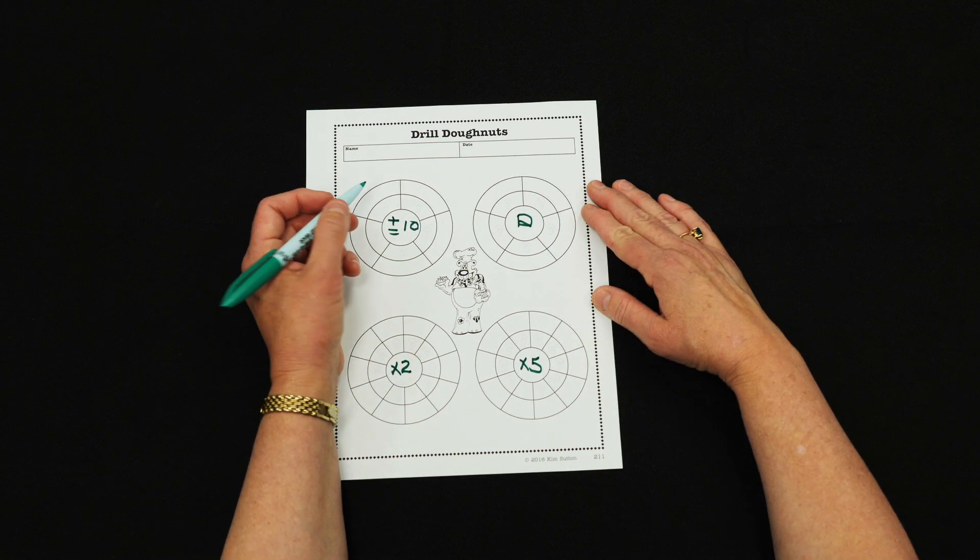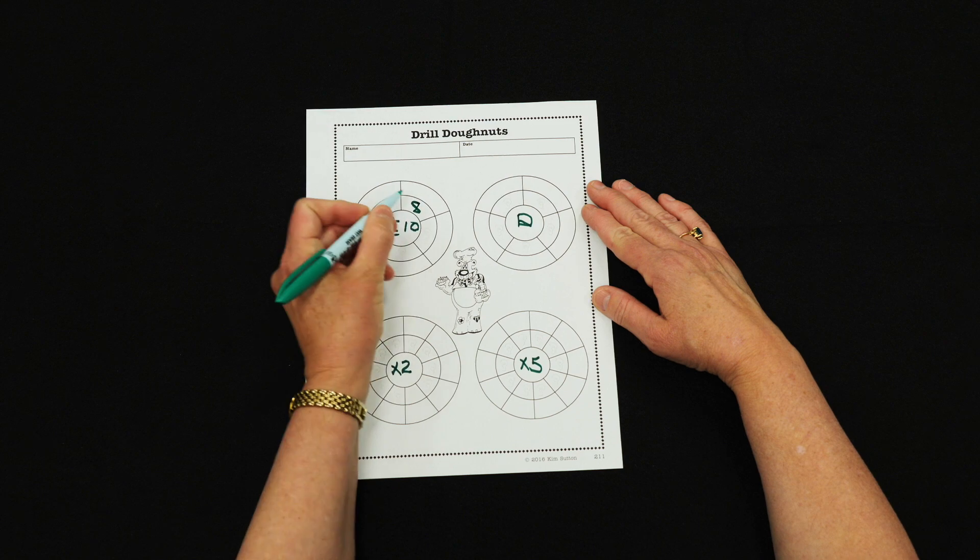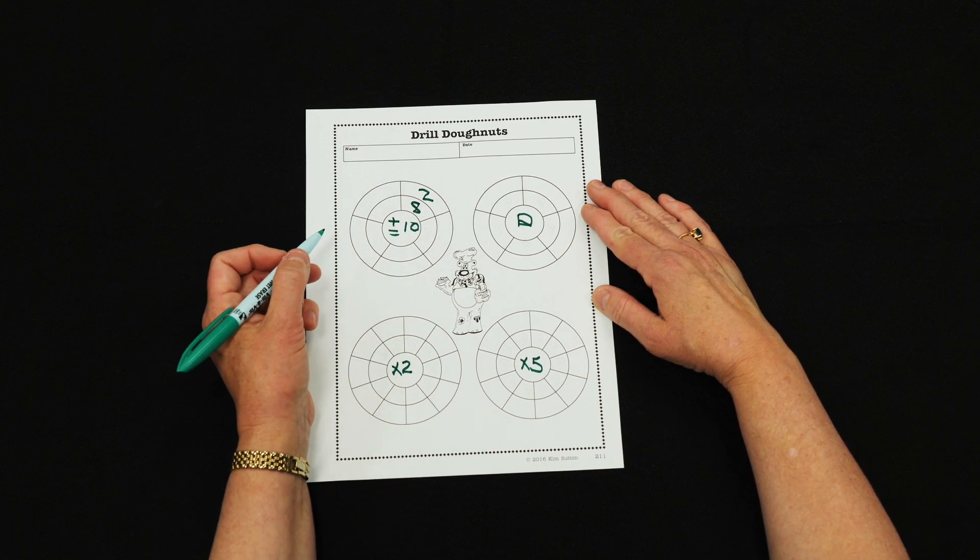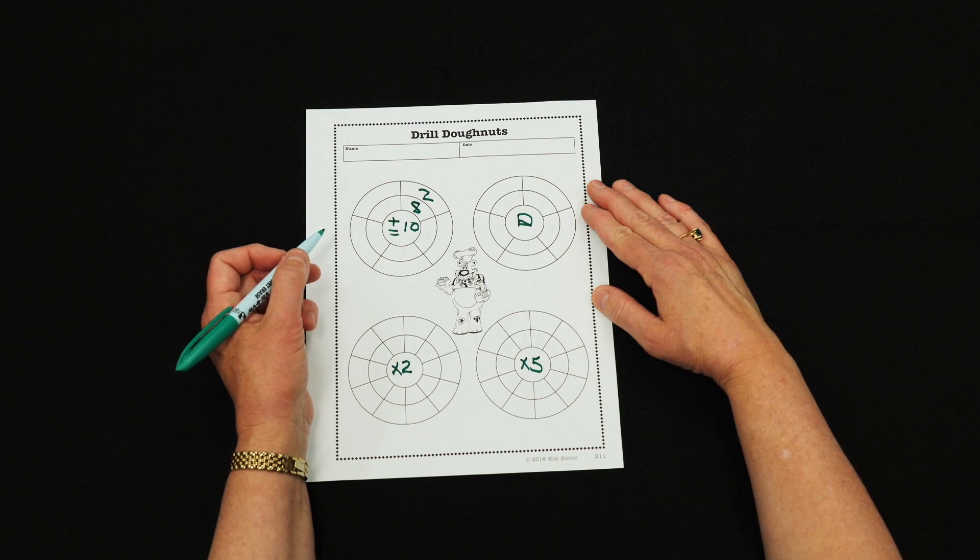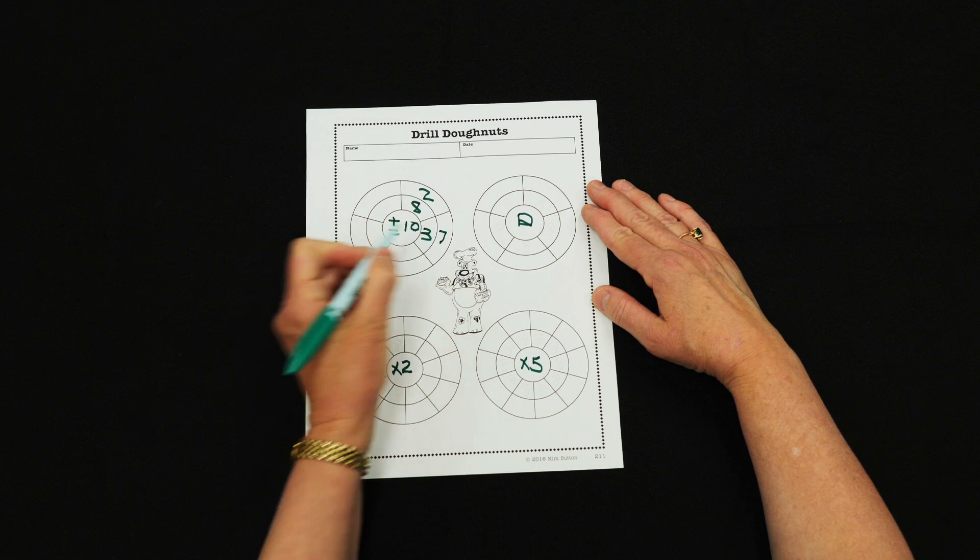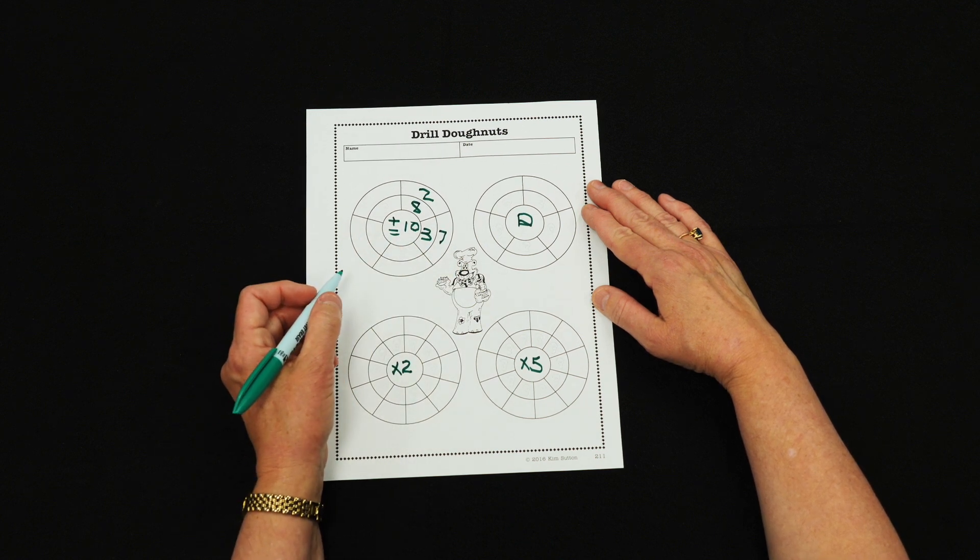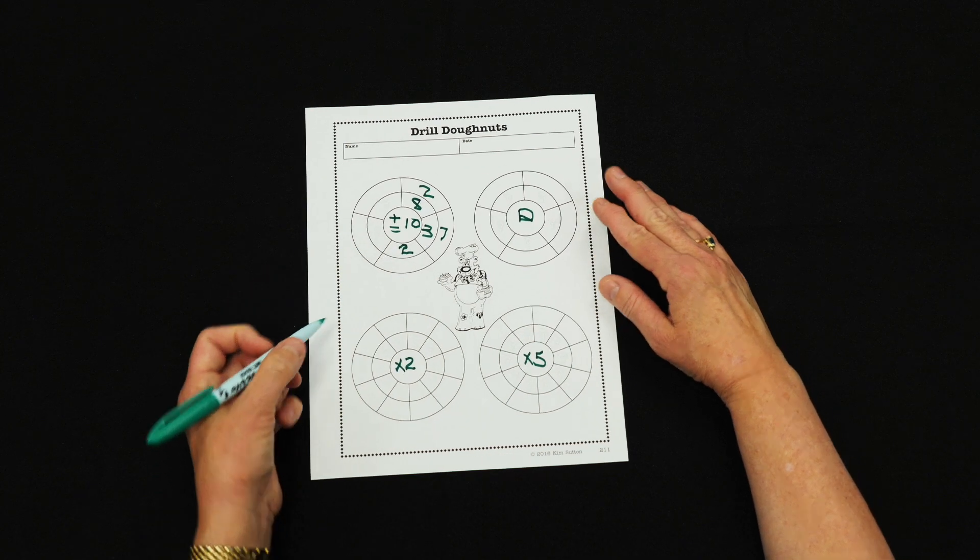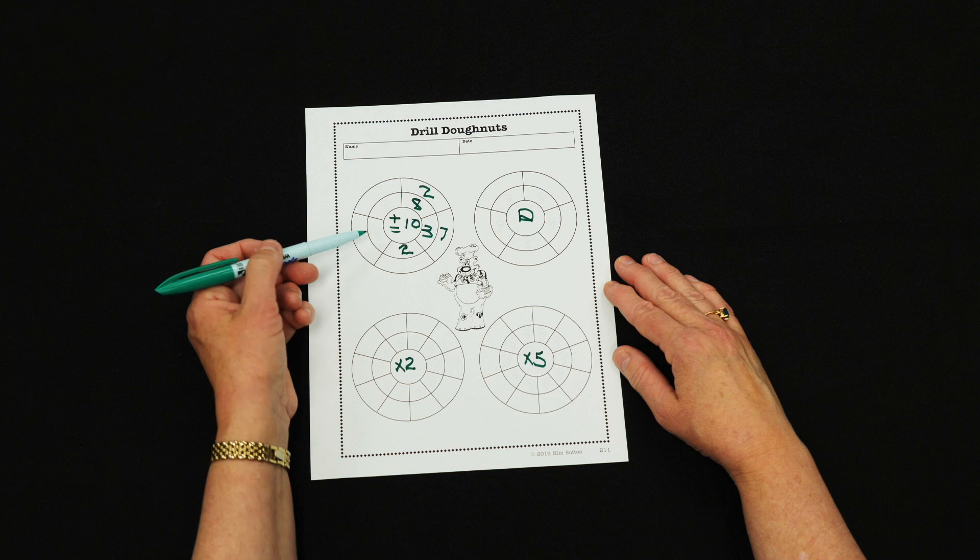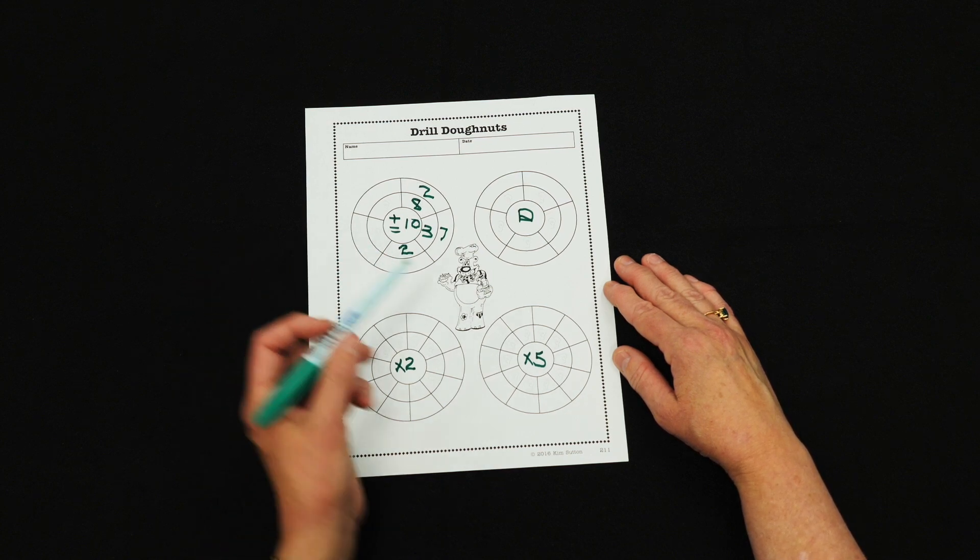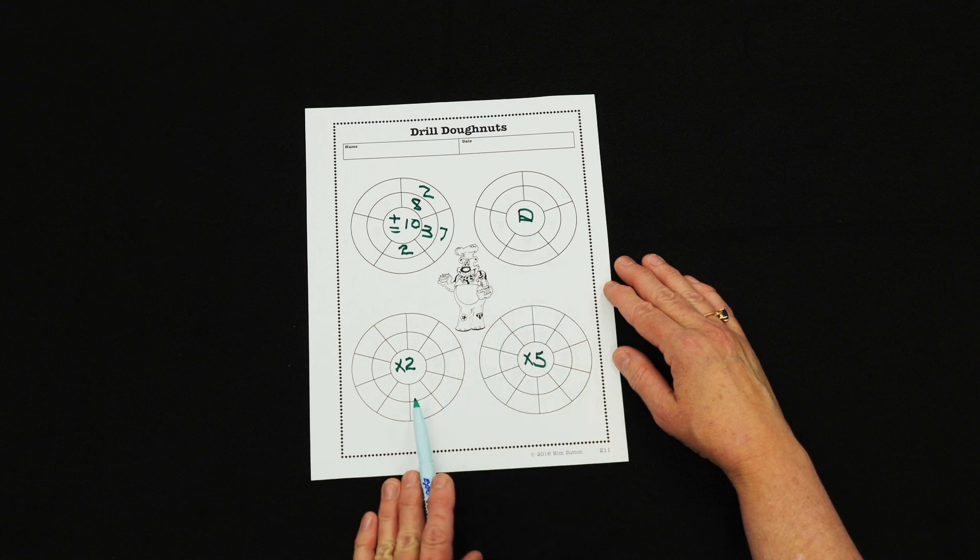This donut is practicing missing addends to make a sum of ten. You can put any drill command into the donuts.